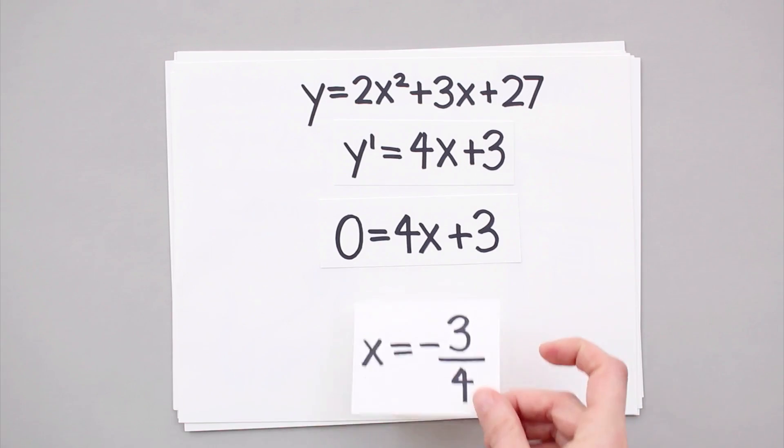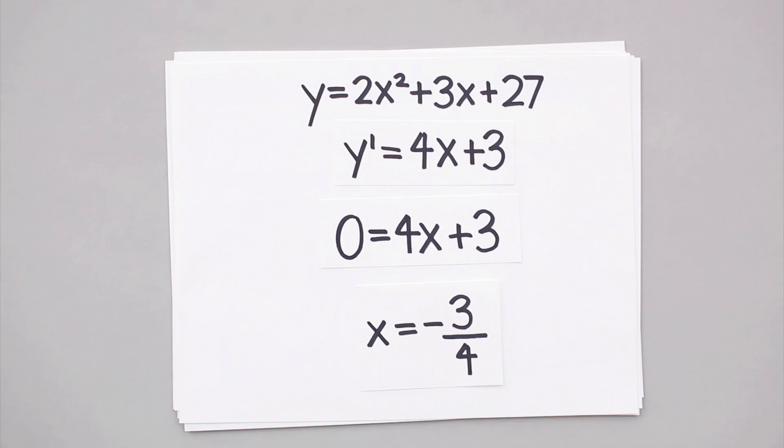We set the derivative equal to zero, and then with a little bit of algebra, we see that this equation is true when x is equal to negative 3 fourths.